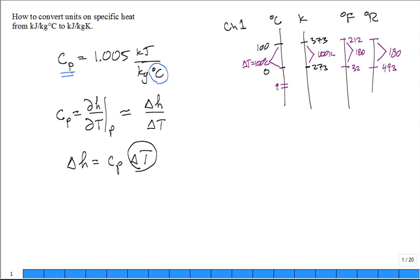So if I want to convert C_P 1.005 kilojoules per kilogram degree C, I multiply by the change in temperature. Here's the relationship. Just like the relationship one foot equals 12 inches.